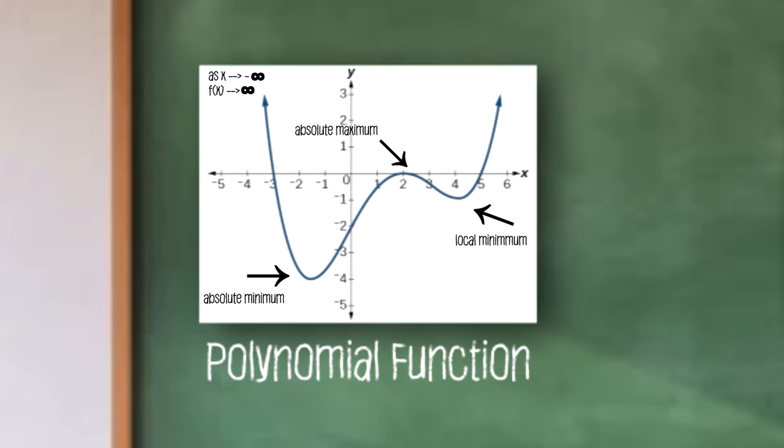Along with this, the graph is smooth and continuous with end behaviors of as x nears negative infinity, f of x, or basically y, nears positive infinity, and as x nears positive infinity, f of x nears positive infinity.